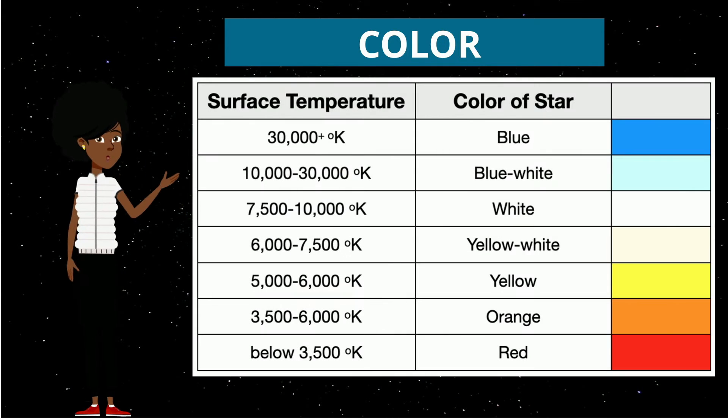As you can see, the blue stars have the highest temperatures of over 30,000 plus Kelvin. As you go down to blue-white, white, yellow-white, yellow, orange, red, reds have temperatures below 3500 Kelvin.